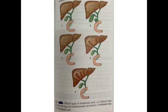This is the schematic representation showing different types of choledochal cyst. Number 1 is the fusiform type, 2 is the saccular type, 3 is choledochocele, 4 is fusiform plus intra-hepatic, and 5 is the intra-hepatic type — you can see the intra-hepatic dilatation, which is Caroli's disease.